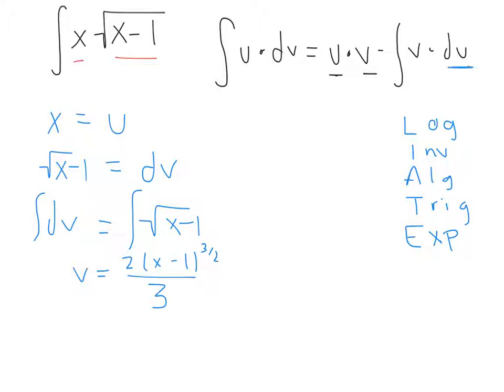But if we plug everything back in, we get u, which is x, times our v, which we found right here. So 2 over 3, x minus 1 to the 3 halves,